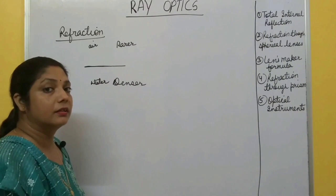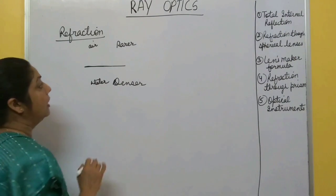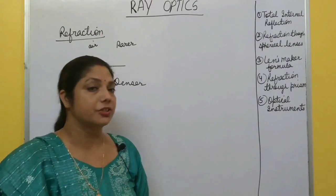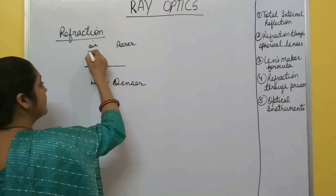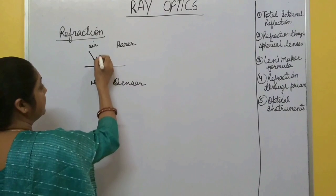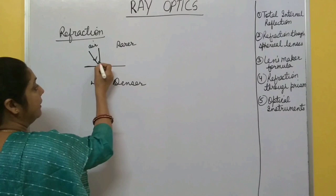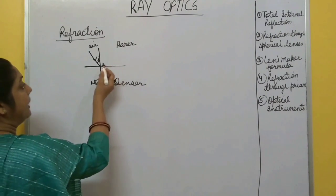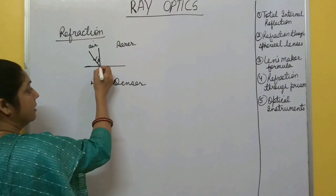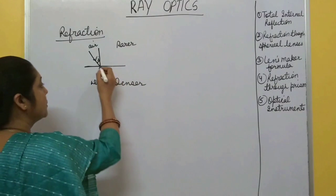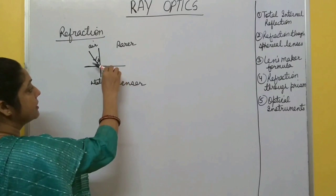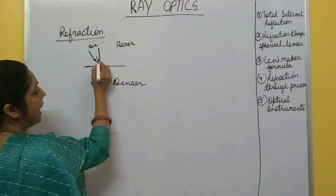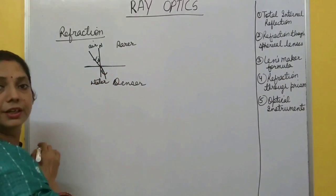Depending on whether light travels from rare to denser medium or denser to rare medium, its direction changes. When light travels from rare to denser medium, draw a normal at the point of incidence. The angle between the incident ray and normal is the angle of incidence. In the denser medium, speed decreases, so it bends towards the normal. The angle between the normal and refracted ray is the angle of refraction.